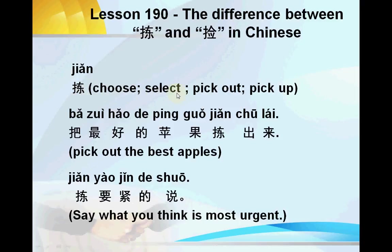The first 'jian' means choose, select, pick out, or pick up — you choose one from others, or select something you want. For example: 把最后的苹果捡出来 (bǎ zuìhòu de píngguǒ jiǎn chūlái). '最后' means 'best/last,' '苹果' means 'apple,' '捡出来' means 'pick out.' So this sentence means: pick out the best apple. This usage means to choose, select, or pick out.